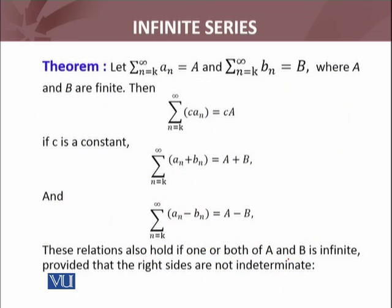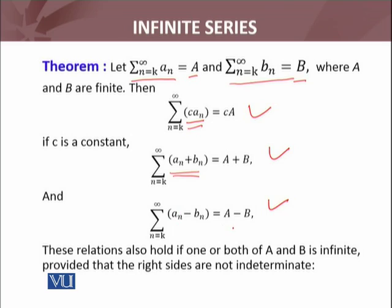Now let's see this important theorem: if Σaₙ is convergent and Σbₙ is convergent, then we have the following results. For any constant real number c, the series Σ(c·aₙ) is convergent and converges to c times the sum of Σaₙ. Also, Σ(aₙ + bₙ) and Σ(aₙ − bₙ) are convergent, with sums equal to the sum of Σaₙ plus or minus the sum of Σbₙ respectively.